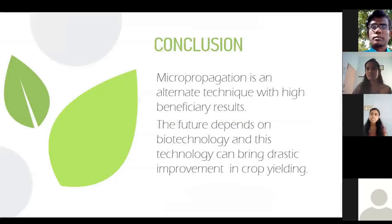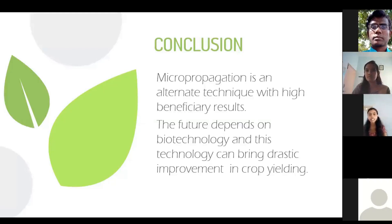Moving to the conclusion, we conclude with our opinion that micropropagation is much more beneficial than the conventional method. Developing countries like India can adopt this technique on a large scale, which would benefit crop production and improvement. If yields are better in quality and quantity, the price for commodities would decrease and even the poor could afford them. This would eliminate starvation and malnutrition to a great extent. When India satisfies its own hunger, export of green crops can be done to foreign countries, resulting in good foreign trade exchange.